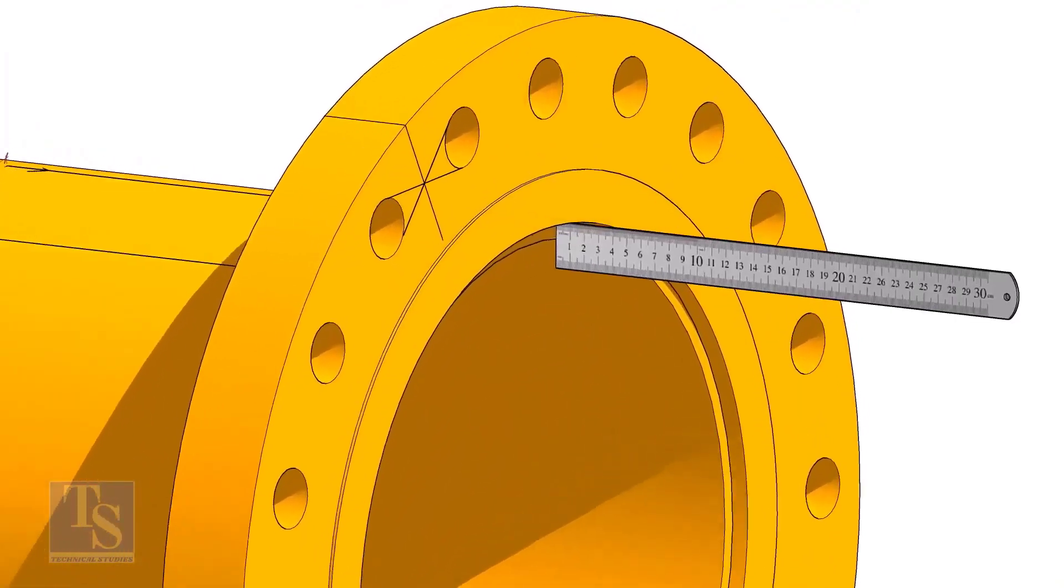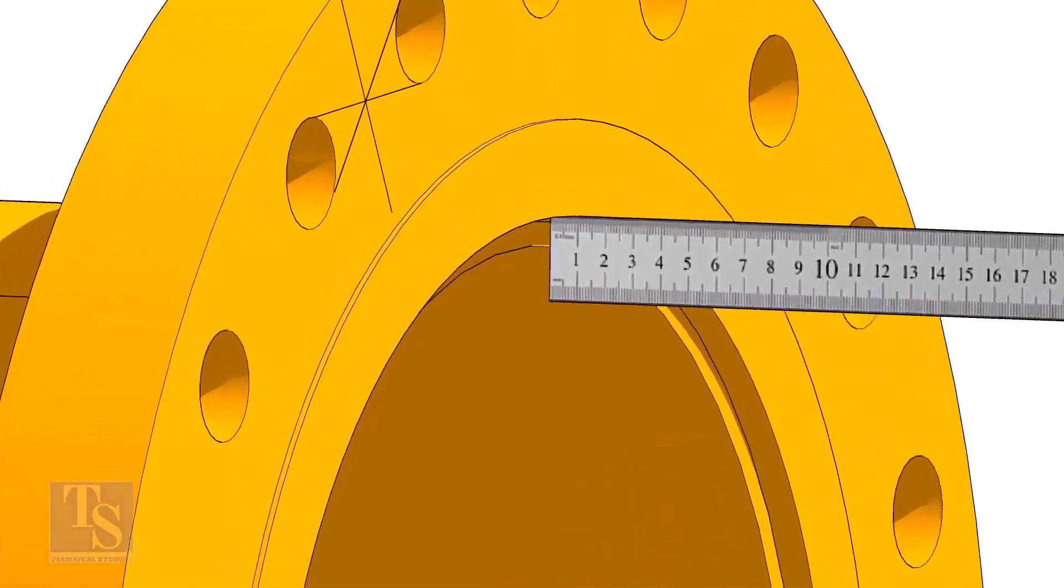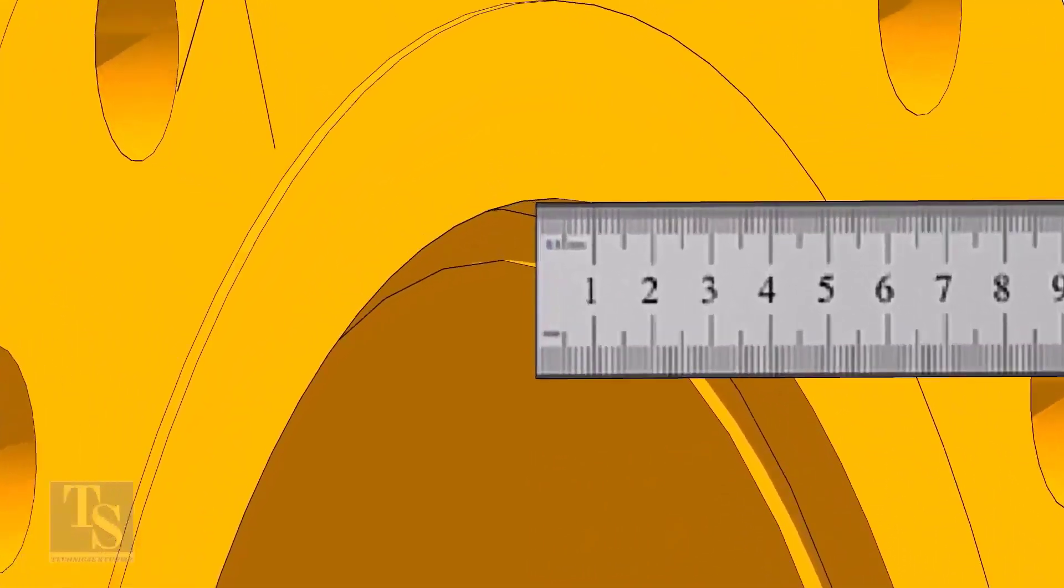Fix the distance between the flange face and the pipe face. Usually, this measurement is equal to the thickness of the pipe.